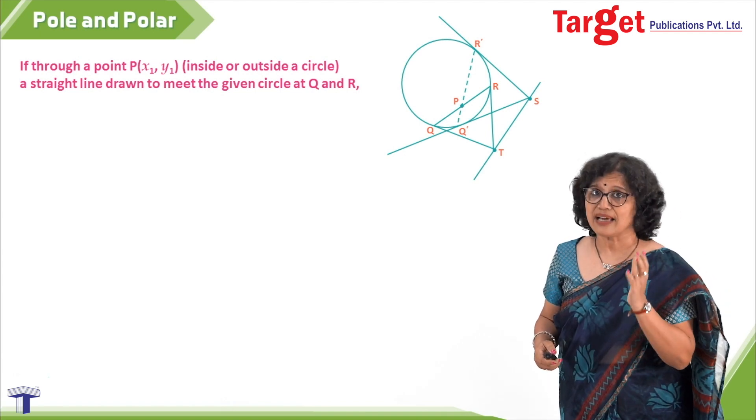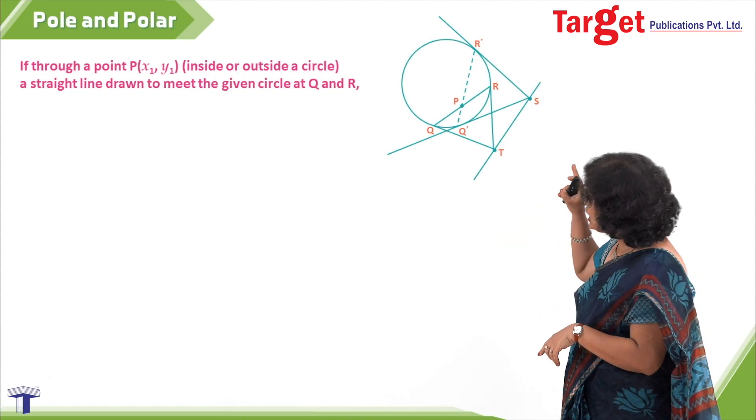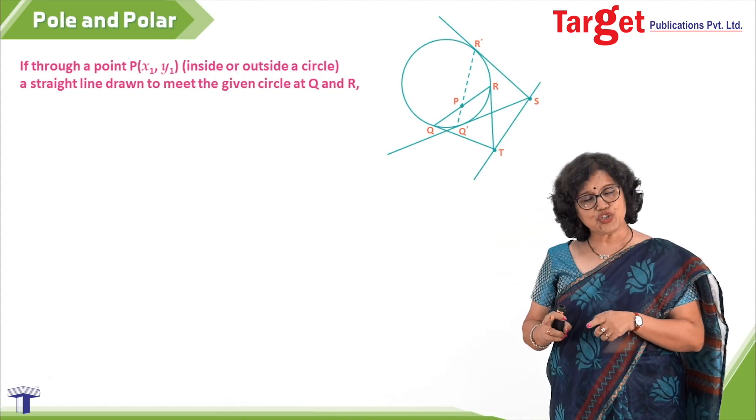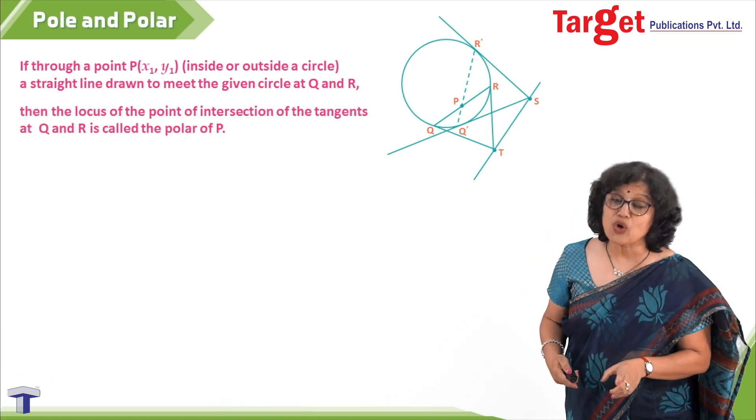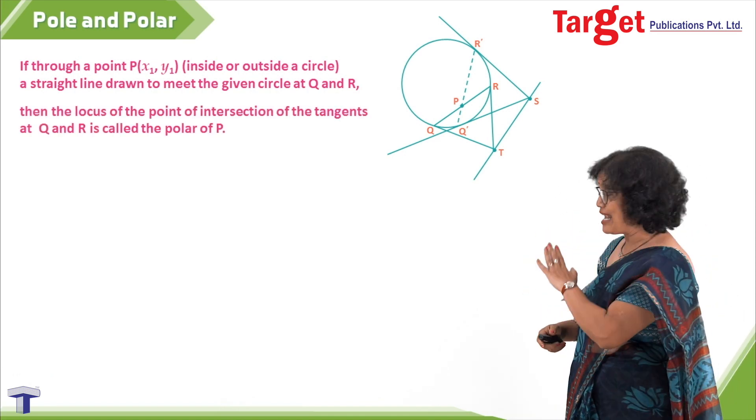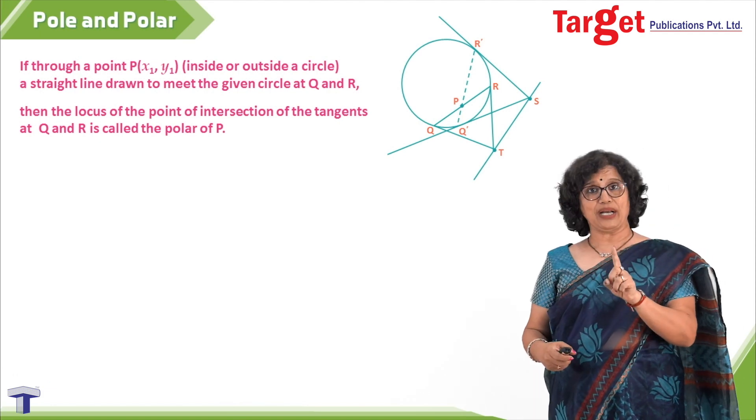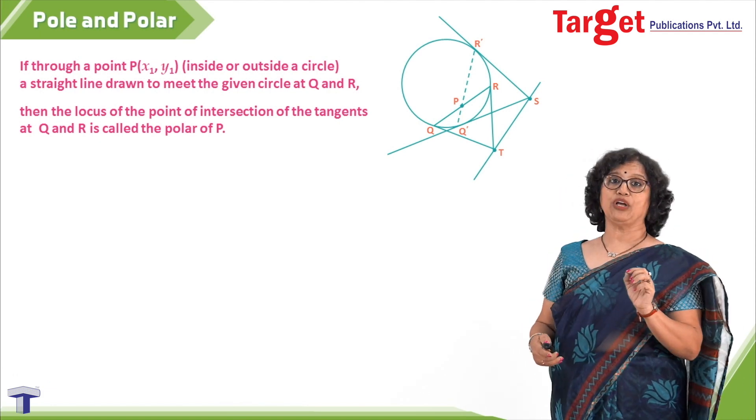Let me complete my statement again. If through point P a line is drawn which meets the circle at Q and R, then the locus of the point of intersection of tangents drawn at Q and R is called the polar of P.